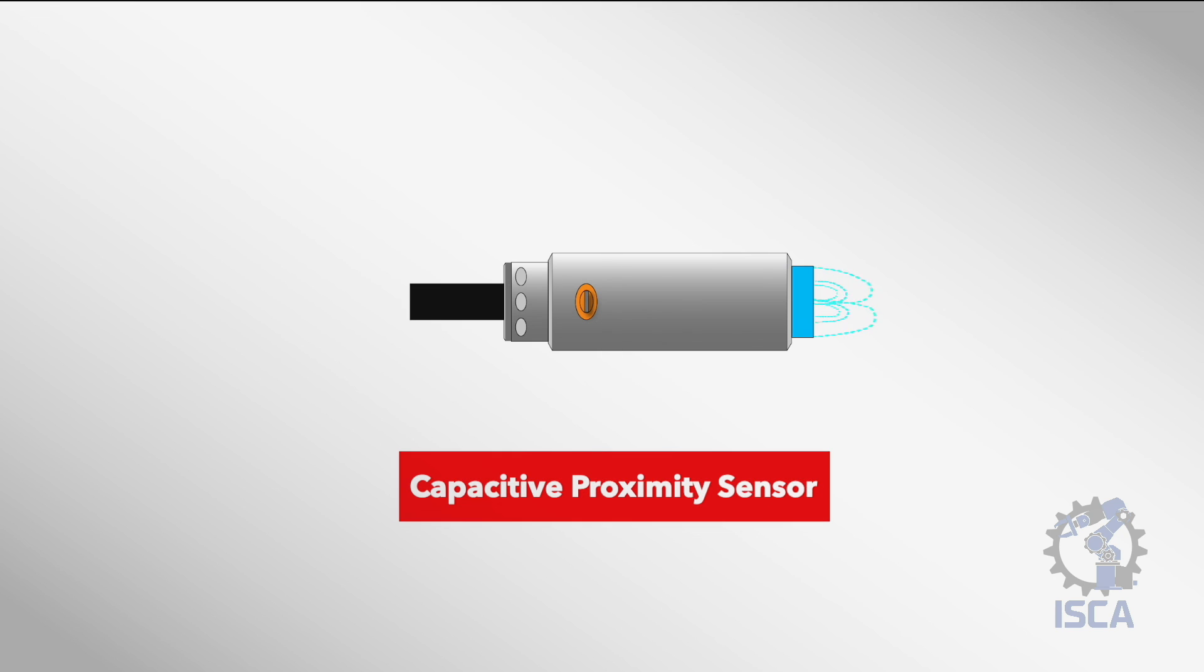In summary, capacitive proximity sensors are versatile and reliable for industrial automation and other applications. They can detect virtually any material and are easy to set up and integrate. Feel free to reach out if you have any further inquiries regarding capacitive sensors.